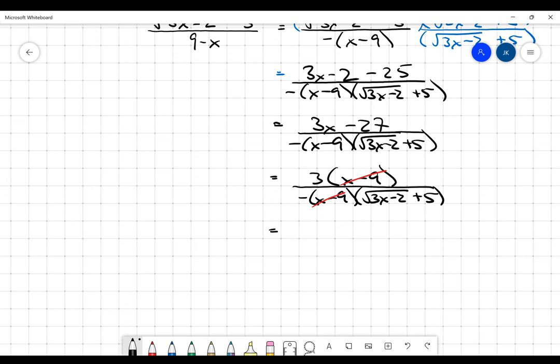Now, this is, of course, assuming that x cannot equal 9, because things have changed a little bit here. And I'm going to move that negative up to the numerator, because whether I'm dividing by a negative or multiplying by a negative, the result will be negative. This will be negative 3 over square root of 3x minus 2 plus 5, with the stipulation here that x cannot equal 9. So that's the answer that we're looking for.